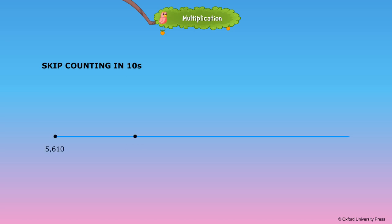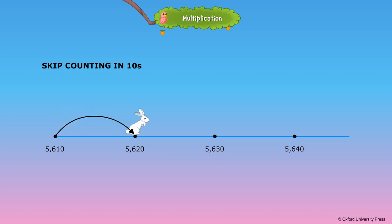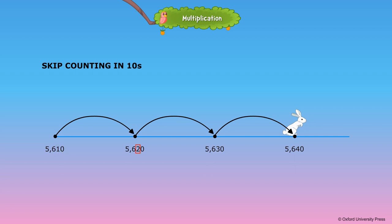Skip counting by ten means that the rabbit standing at 5610 jumps in multiples of ten: 5610, 5620, 5630, 5650. Note that only the digit in the tens place increases by 1.